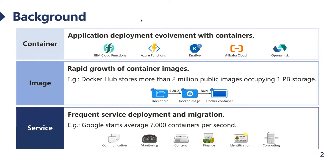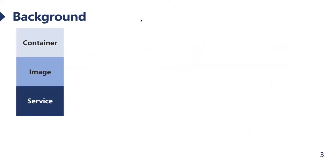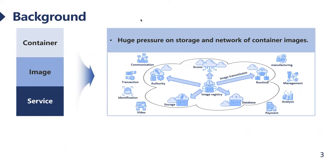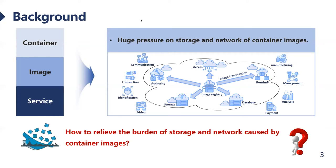Due to the ubiquitous mobile device, dynamic requests lead to frequent service deployment and migration. Google starts an average of 7000 containers per second to support continuously changing requests. Developing containers, growing images, and dynamic servers — these factors lead to huge pressure on storage and network of container images. So how to relieve the burden of storage and network?